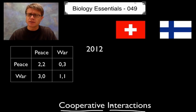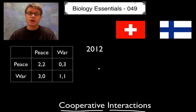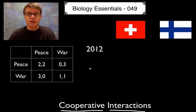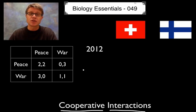Before we get to living systems, let's talk about war and peace for just a second. Game theory is a way to predict the strategy that people or living things are going to have before they actually do it. So peace and war is a good one to talk about.